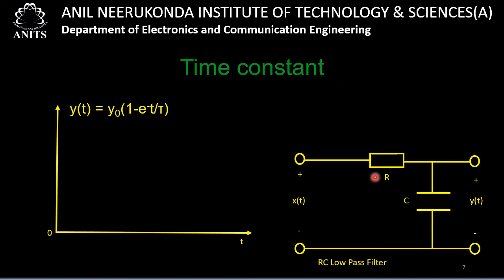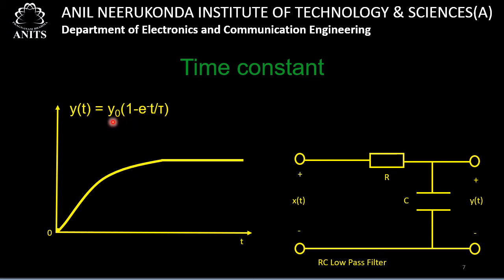When we plot time on the x-axis and y(t) on the y-axis, the output starts rising slowly. As t tends to infinity, e^(−∞) = 0, so y(t) approaches Y₀, the maximum value. The output rises gradually until it reaches this maximum.